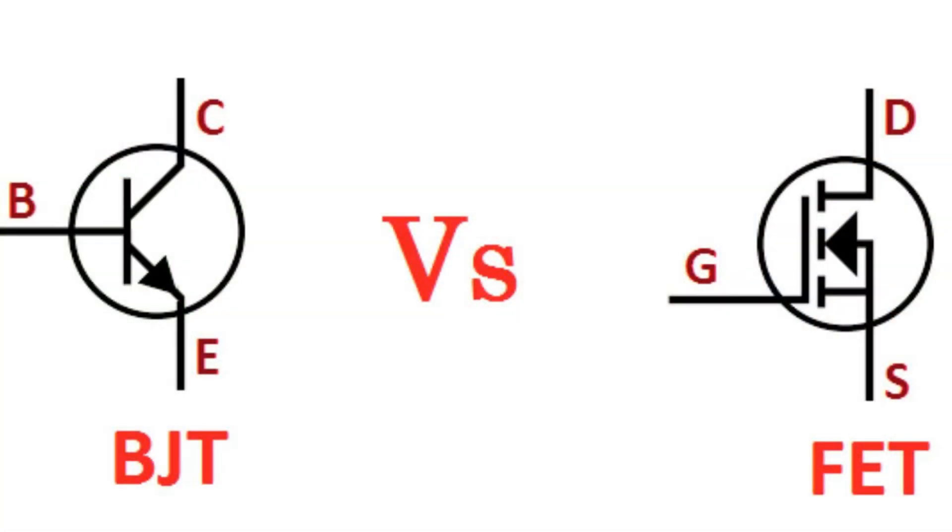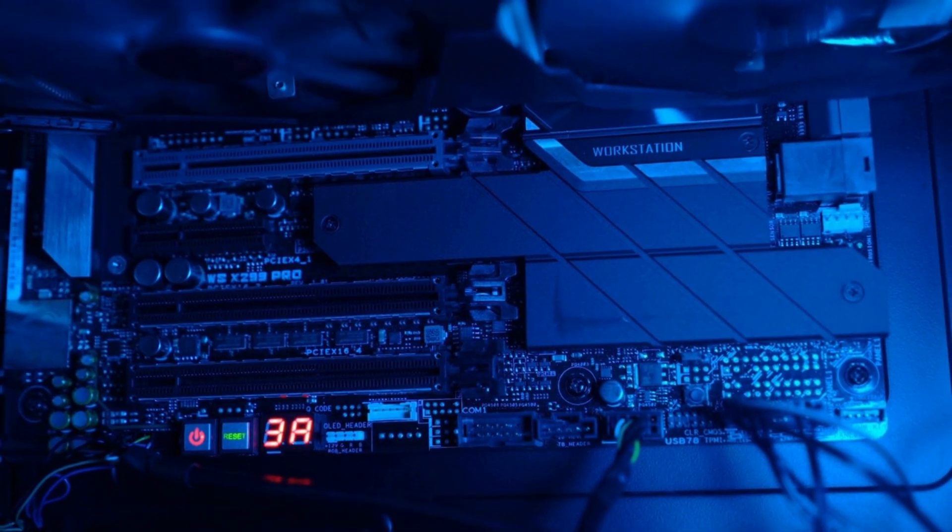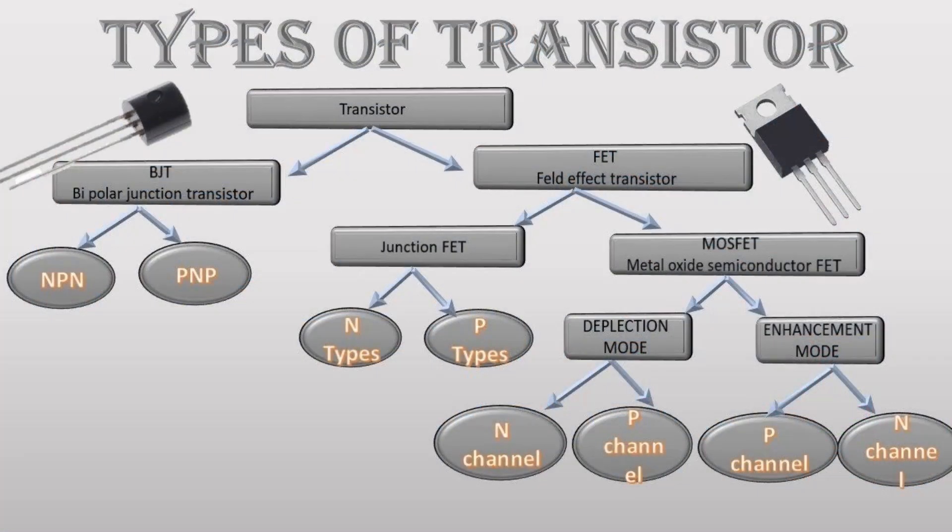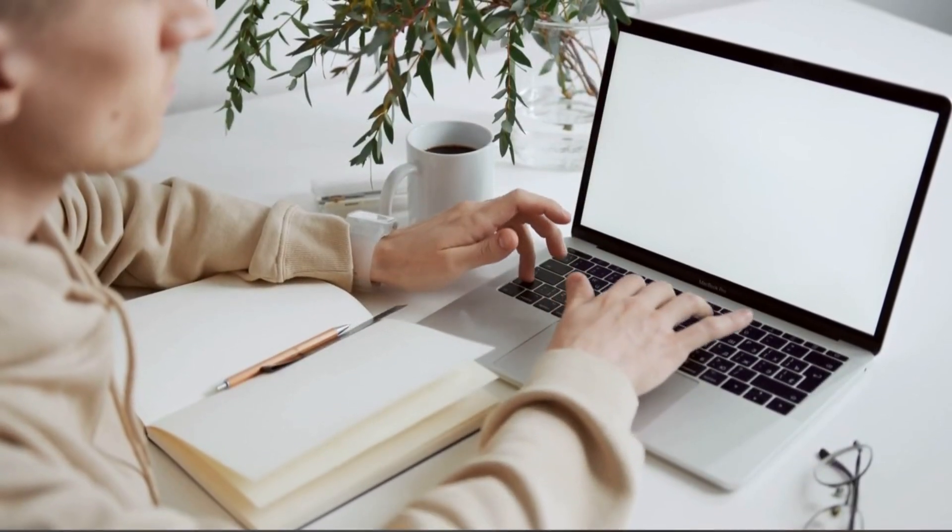Whether it's a bipolar junction transistor or a field-effect transistor, each one plays a critical role in the world of electronics. Indeed, their role is as vital as the heart in a living organism, pumping life into our beloved gadgets.